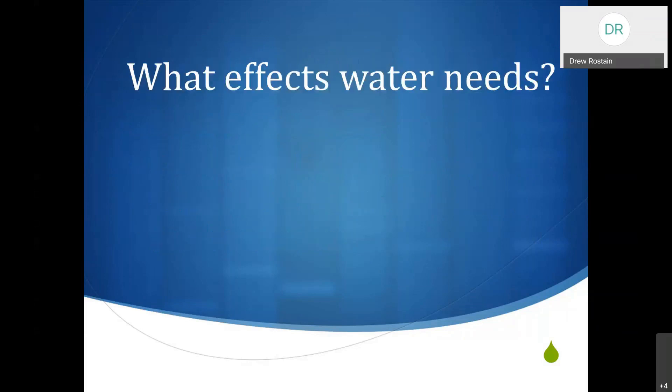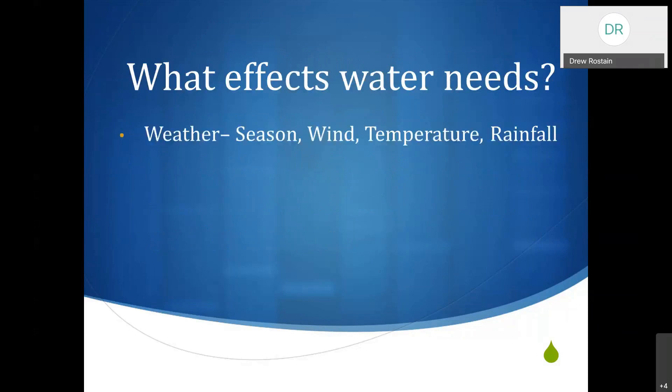What are some of the things that affect water needs of plants? The weather is the obvious one. Some of the things that impact weather are the season — the time of year — because the angle of the sun is different throughout the year. The amount of solar radiation changes throughout the year. So even if temperatures are high in the wintertime, it doesn't necessarily mean plants need the same water as in summer because there are fewer hours of light.